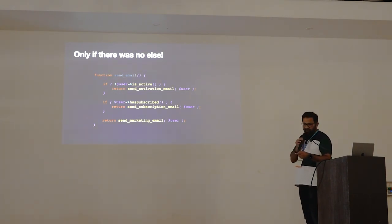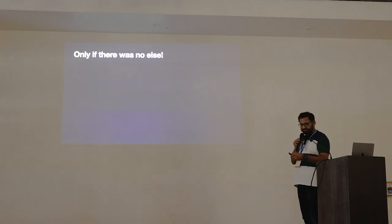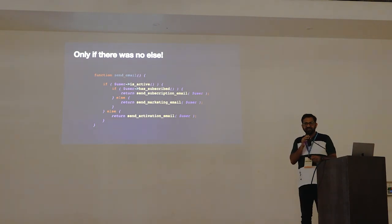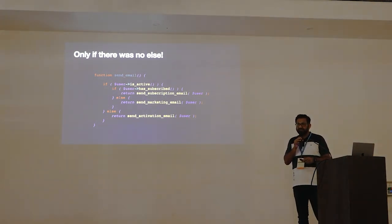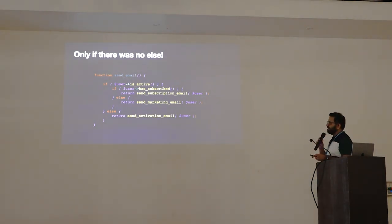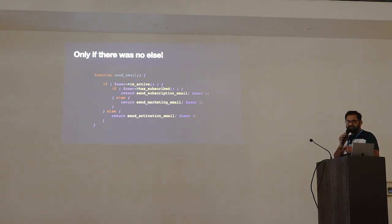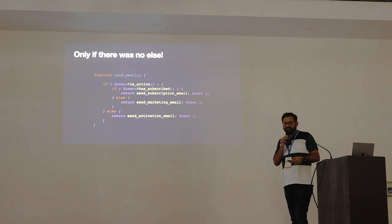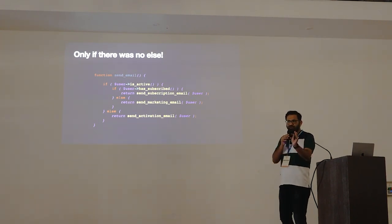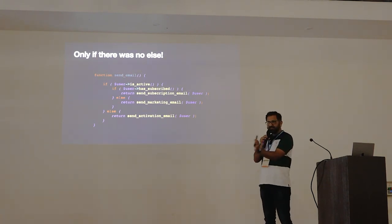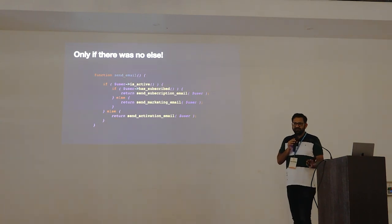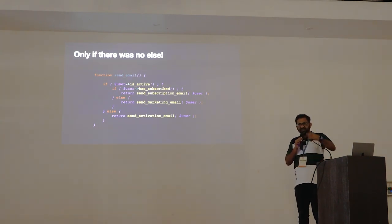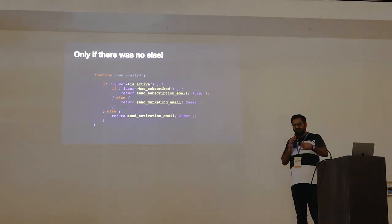This also reduces the cyclomatic complexity — the number of paths the code might have to take. Try to reduce the indentation of your code. The more your code is indented, the higher the cyclomatic complexity. Try to keep one or two levels of indentation at most. If you see three or four levels, refactor it.